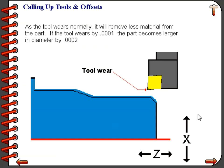The wear offset allows us to input a value, shifting the tool by a certain amount. For example, if our tool had worn one tenth of a thousandth, our workpiece would become two tenths of a thousandth larger in diameter. When we go to offset this tool we simply need to tell the machine how much smaller in diameter we want to make the part — in this example, two tenths smaller — so we would put in an incremental offset of two tenths of a thousandth.